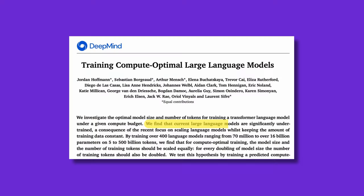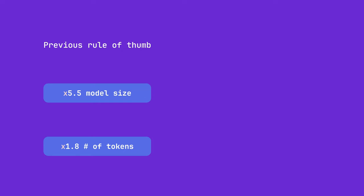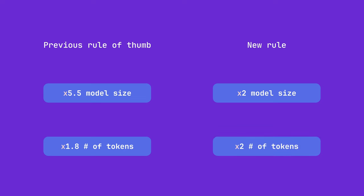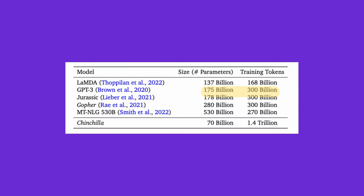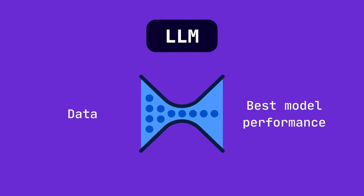Previously, it was believed that increasing the model size was the most effective way to improve model performance, whereas increasing the dataset size was not deemed as important. However, more recent research has shown that many current LLMs are significantly under-trained with respect to the amount of data seen during pre-training. The latest work showed that for best model performance, every time the number of parameters doubles, the data size should also double. This points to the possibility that the amount of training data needed will be the true fundamental bottleneck for these AI systems.